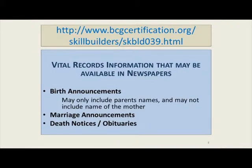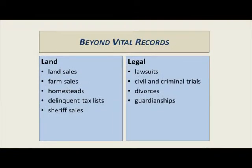The vital records information available in newspapers includes birth announcements, which may only include the parents' names — often just Mr. and Mrs. So-and-so had a baby, boy or girl. Also marriage announcements, death notices, and obituaries. Beyond vital records, you might find land sales, farm sales, homesteads, delinquent tax lists, sheriff sales, and for legal items: lawsuits, civil and criminal trials, divorces, and guardianships.